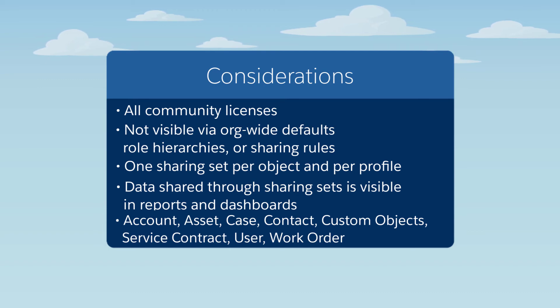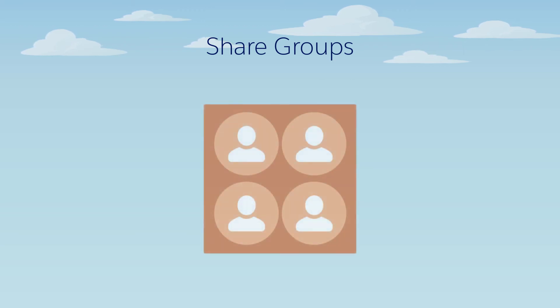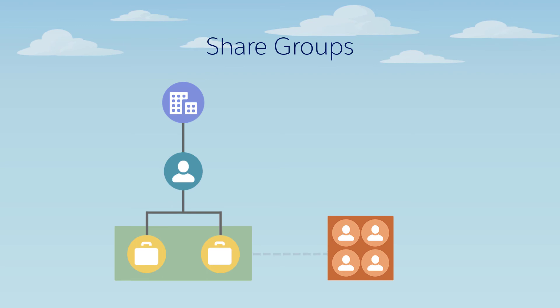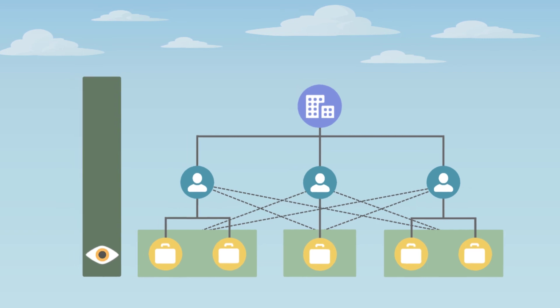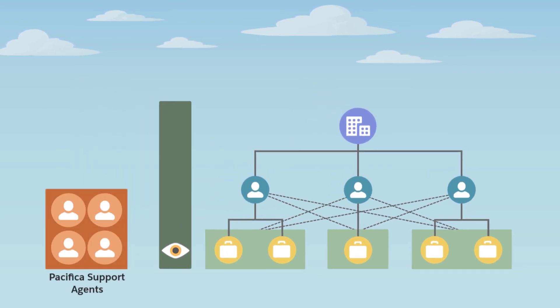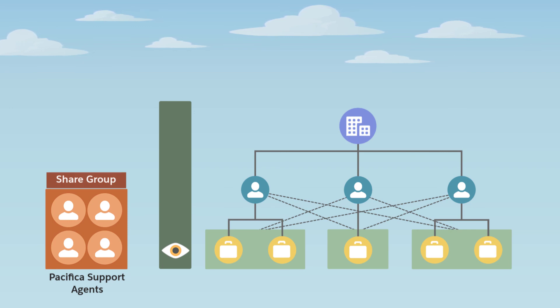Sharing Sets only work with community licenses, so how do your internal users get access to records owned by external users? Welcome to Share Groups. Share Groups grant internal users access to records shared through Sharing Sets. A user in a Share Group gets full access to records owned by users associated to the Sharing Set. For example, Pacifica now wants all their internal support agents to have full access to cases shared via Sharing Set, so the Pacifica admin creates a Share Group on the Sharing Set and adds all support agents. As a result, those agents get full access to cases visible through this Sharing Set.